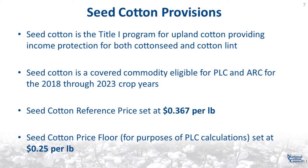The seed cotton provisions effective for the 2018 crop year remain unchanged in the 2018 Farm Bill. Seed cotton is the Title I program for upland cotton, providing income protection for both cotton seed and cotton lint. Under the 2018 Farm Bill, seed cotton is a covered commodity eligible for PLC and ARC for the 2019 through 2023 crop years. The seed cotton reference price is 36.7 cents per pound. The seed cotton price floor, for the purposes of PLC calculations, is 25 cents per pound.